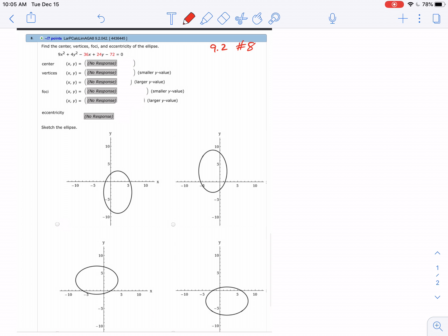For number 8 in section 9.2, we're working with an ellipse again. I recognize this because the x squared and y squared have positive coefficients in front of them, so I'm going to use the completing the square technique.